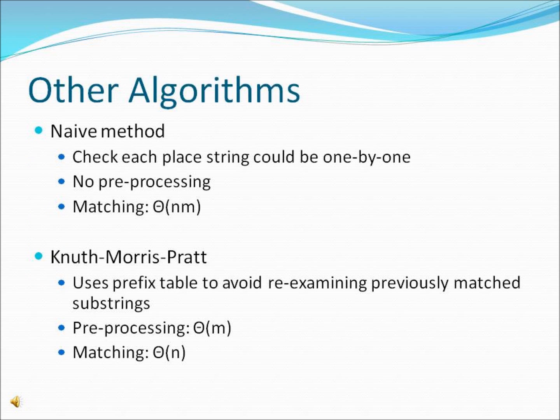To understand the Boyer-Moore-Horspool algorithm, we need to put it into perspective with the other string matching algorithms. A naive method works by checking if each possible substring of the correct length is a match. This requires no preprocessing but takes Θ(nm) time to match.